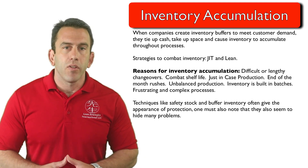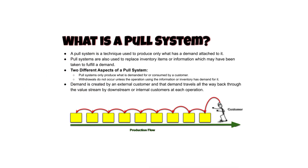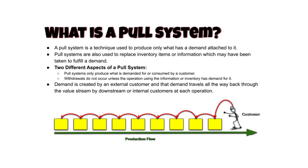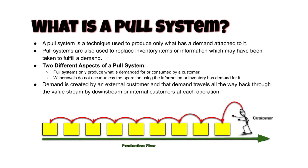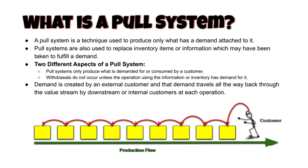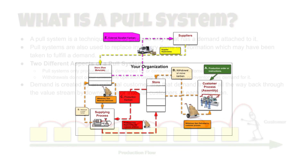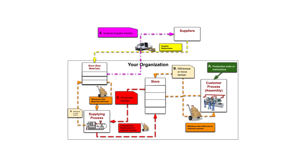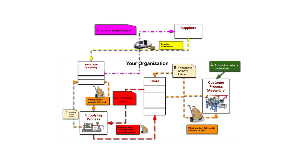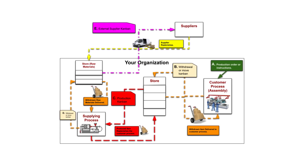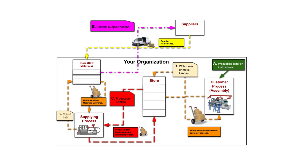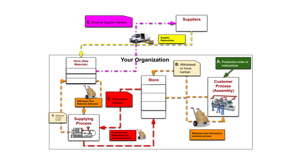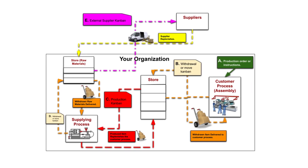As we've discussed in other modules, a pull system reverses the flow of materials and information and triggers the production of items and information that is based on real customer demand. For example, a Kanban system can assist in pulling demand through the value stream as workers begin to adapt to the new system. As time goes on, suppliers begin to understand that building to the demand of customers can create flow that is based on real demand.